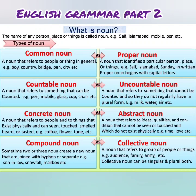The second is proper noun — a noun that identifies a particular person, place or thing. For example: Saif, Islamabad, Sunday. Proper nouns are written in capital form; the first letter of a proper noun will always be capital.